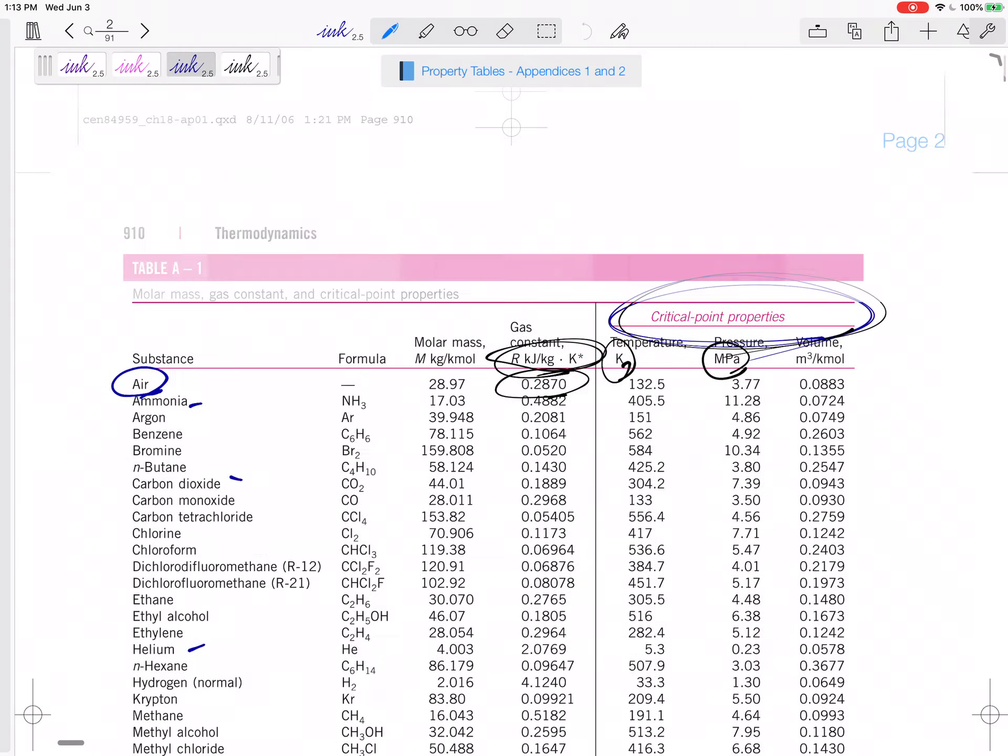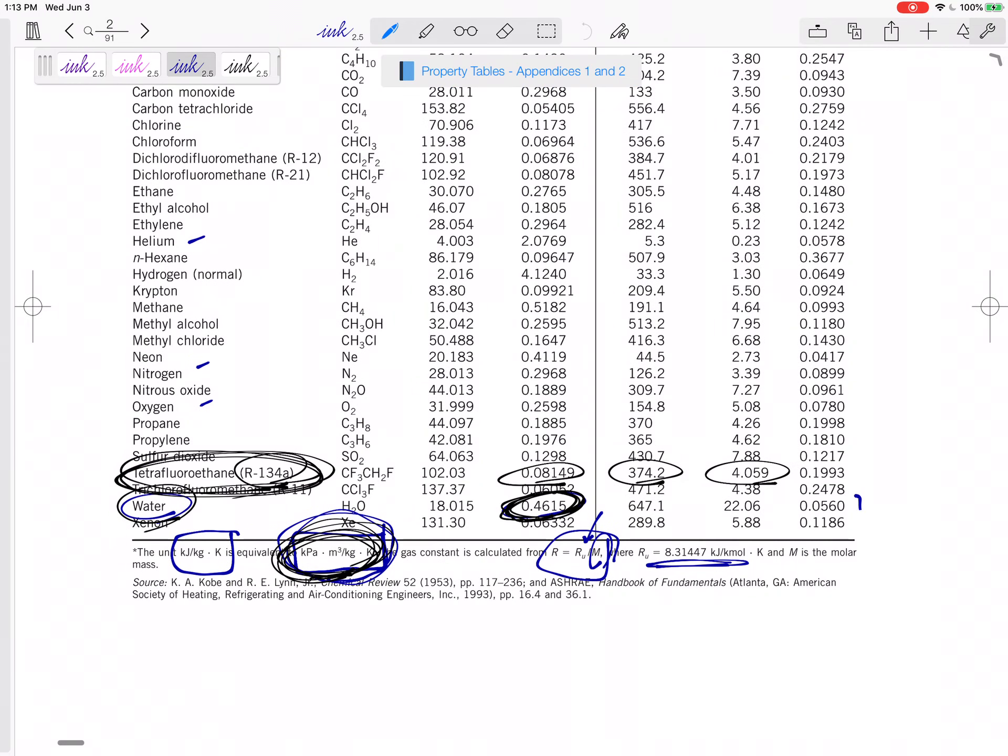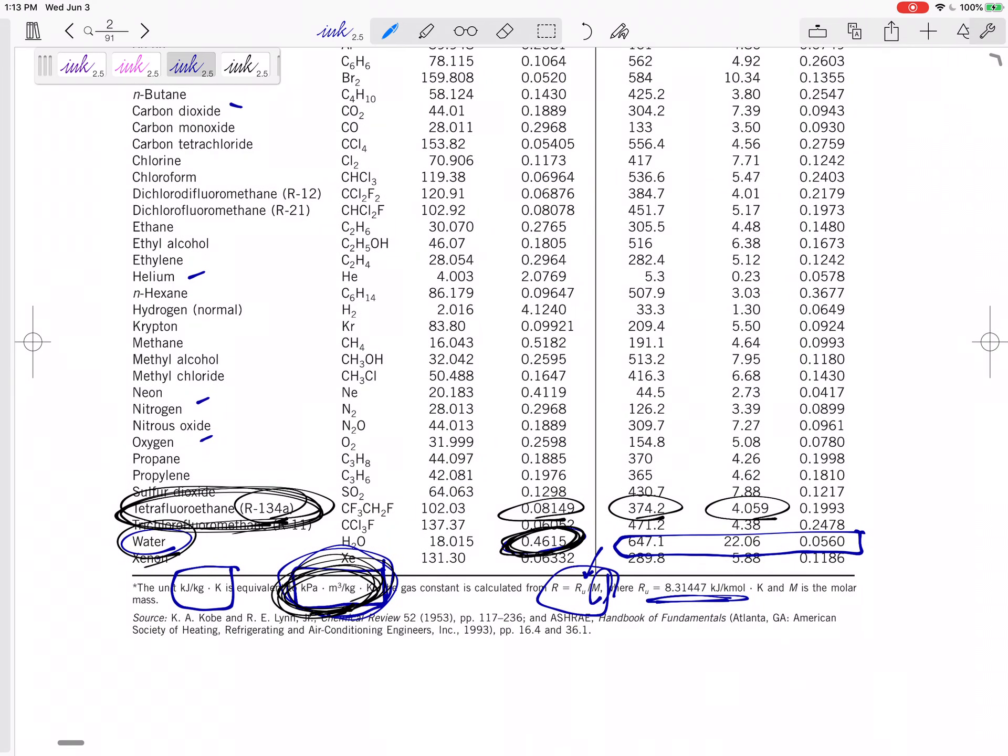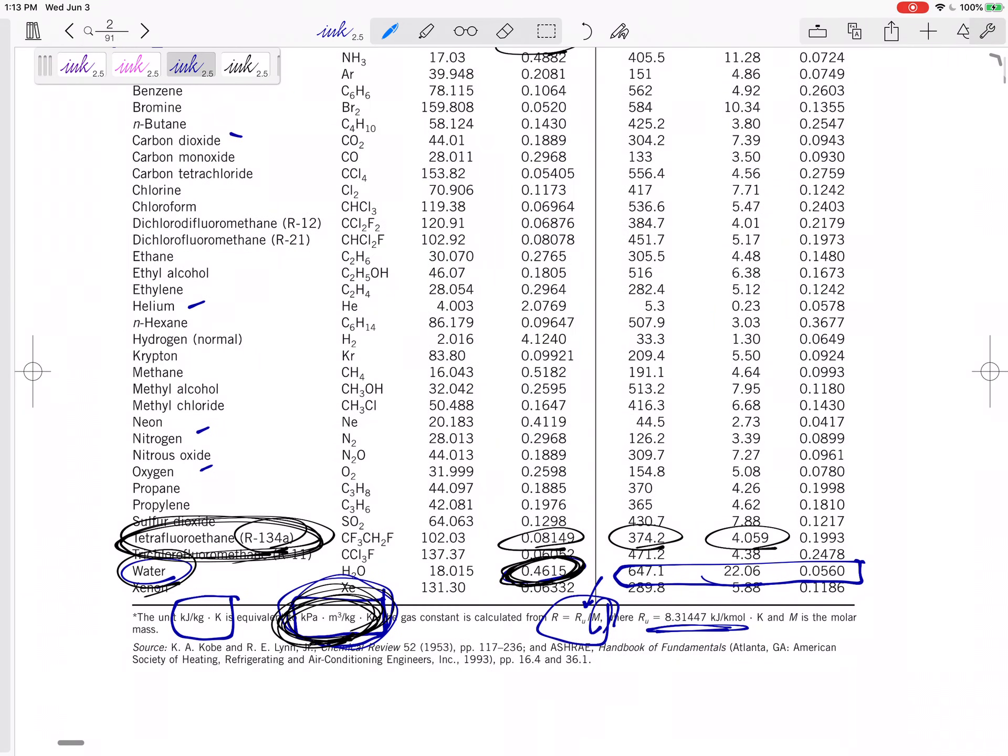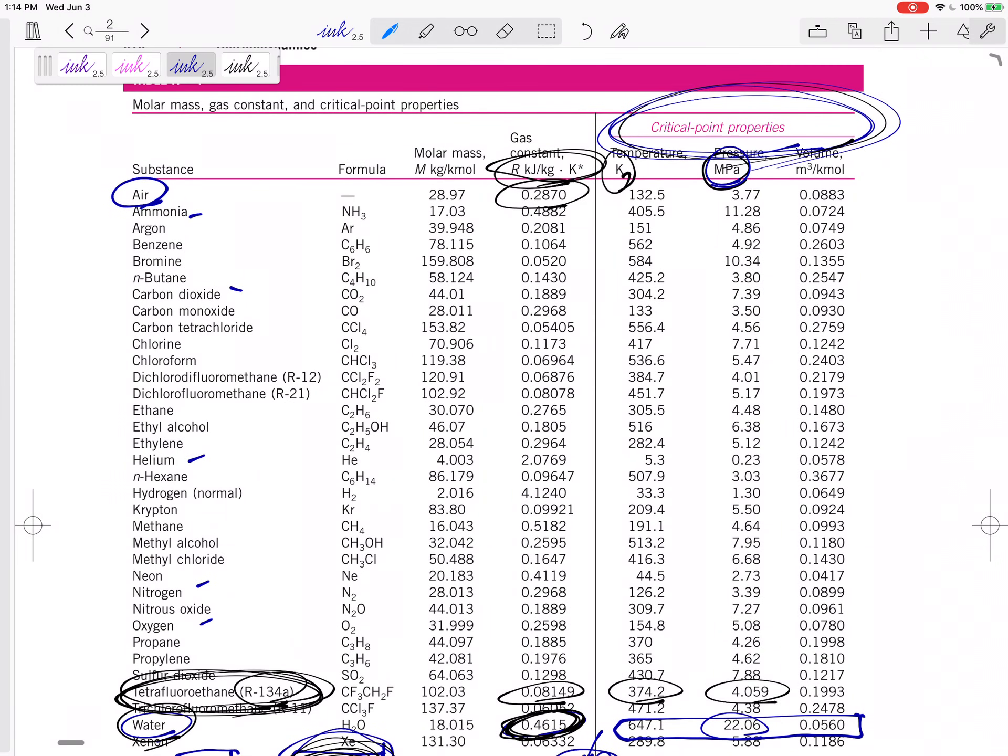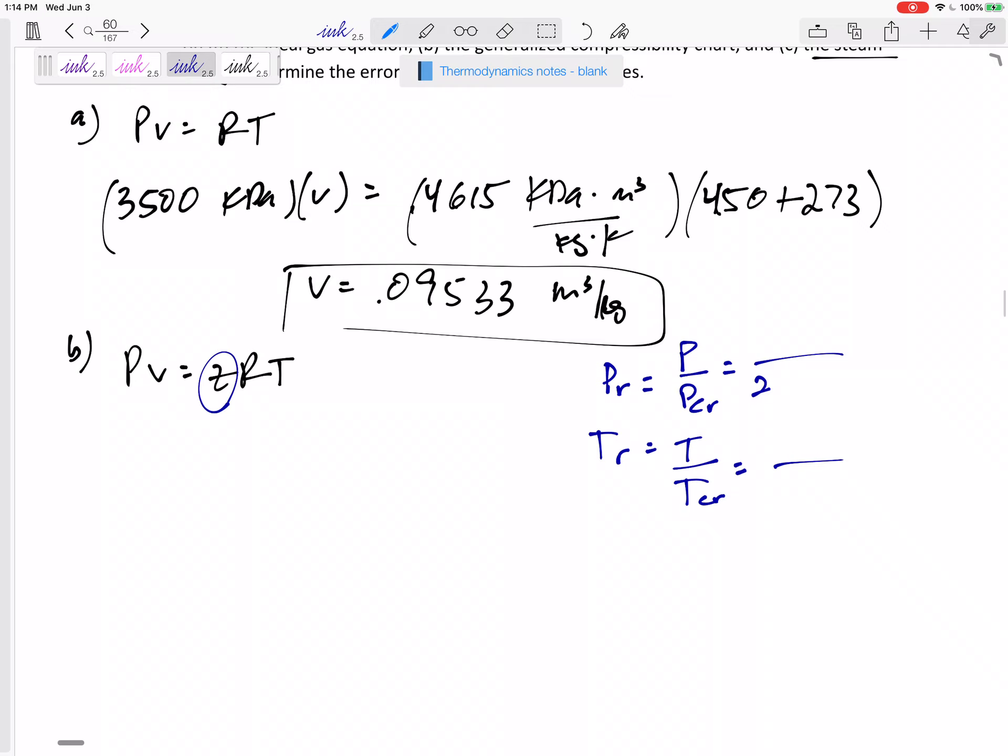So property tables, table A1. Here are the critical point temperatures for water, the second from the bottom right here. The temperature, 647.1, and the pressure, 22.06. Now let's look at that Mpa. Okay, 22.06 Mpa. So go back to our notes. This was 22.06 Mpa. This temperature was 647.1 Kelvin.